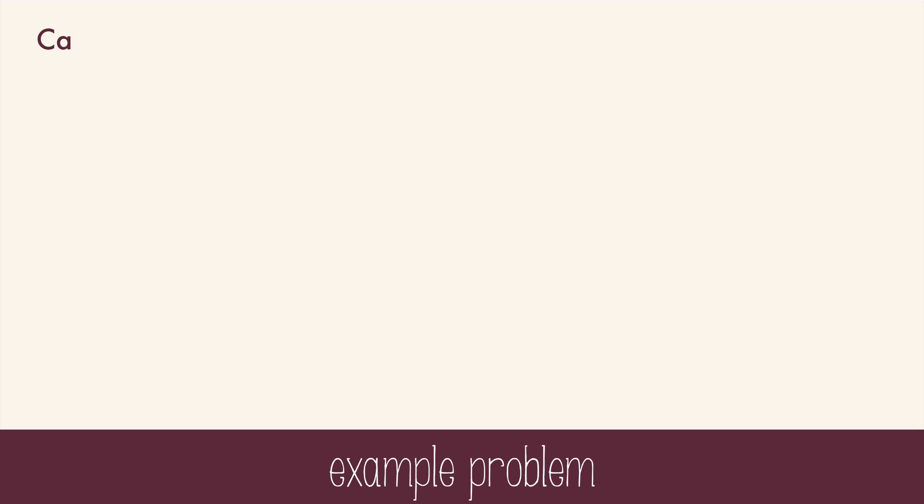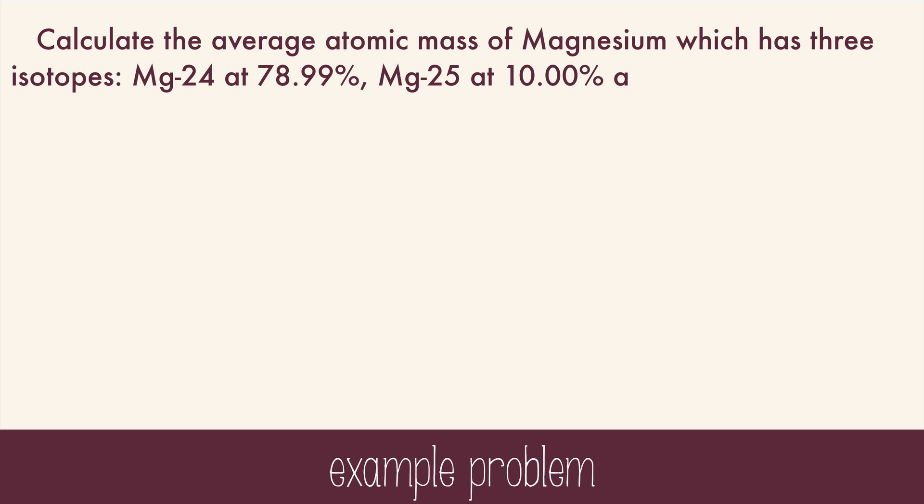Let's try another example. Calculate the average atomic mass of magnesium, which has three isotopes.